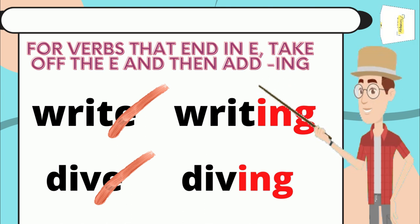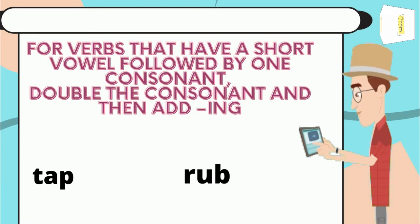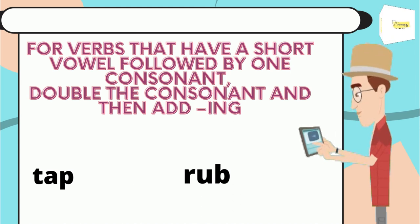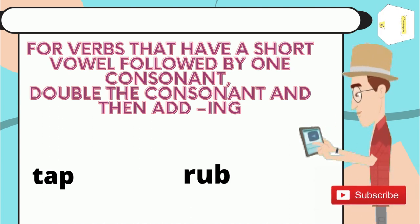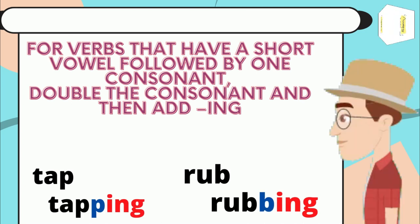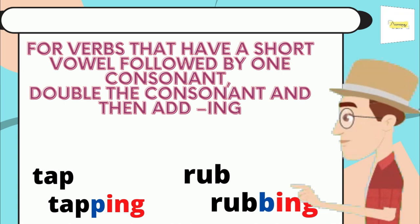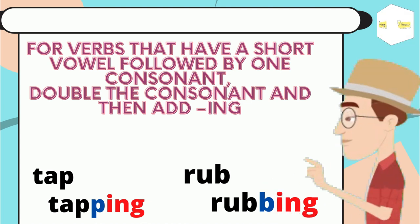Now let's go to the next pattern of rules. For verbs that have a short vowel followed by one consonant, double the consonant and then add '-ing'. We will double the 'p' and add '-ing' for 'tapping', and we will double the 'b' and add '-ing' for 'rubbing'. Those are the rules for how you can form the suffix '-ing'.